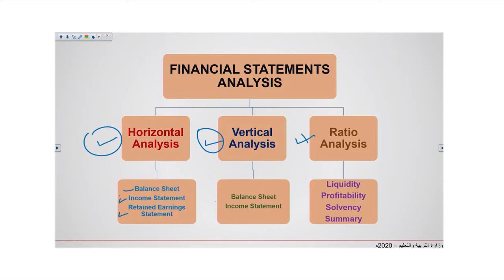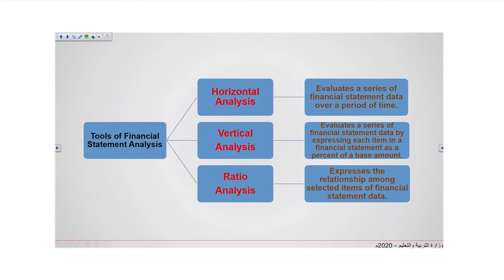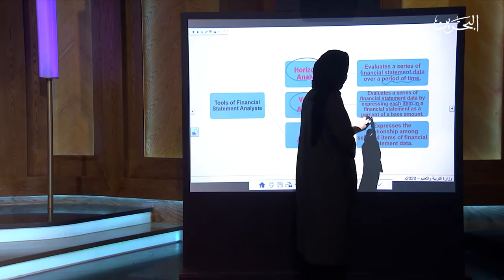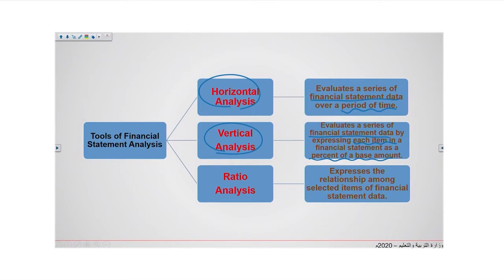For the ratio analysis, it will not be covered in this chapter — which covers liquidity, profitability, solvency, and summary. The tools of financial statement analysis: for horizontal analysis, we can evaluate the series of financial statement data over a period of time. In vertical analysis, we evaluate each item in a financial statement as a percent of the base amount. In ratio analysis, we express the relationship among selected items of financial statements.